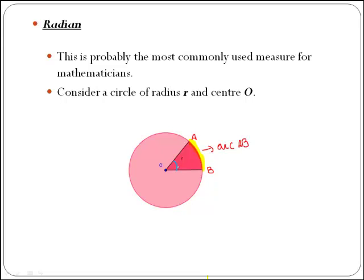If we talk about this angle here, we say that the arc AB subtends an angle at the center O. This is the center and this one would be the angle. But what happens if the length of the arc is precisely the same as the radius?